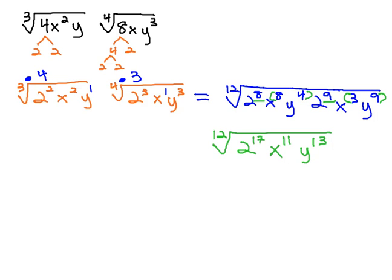We aren't quite done yet, though, because you might notice that some of these exponents are greater than the index of 12. This means we can pull some of the factors out of the radical by dividing the exponents by the index to see what comes out of the 12th root and what remains inside the 12th root.